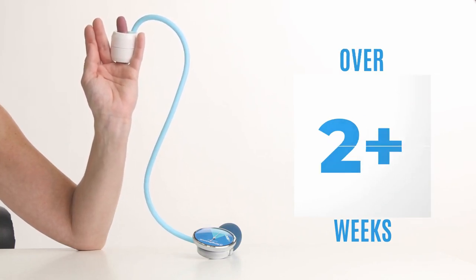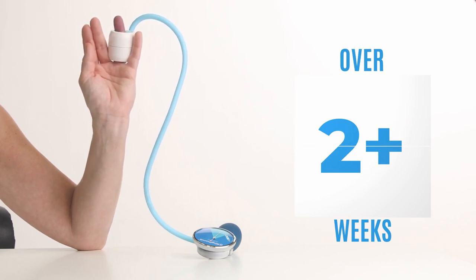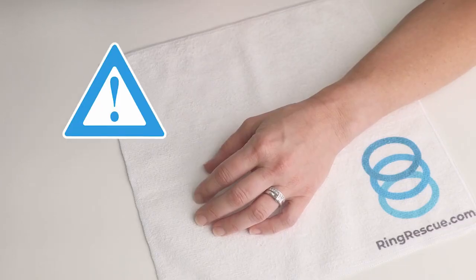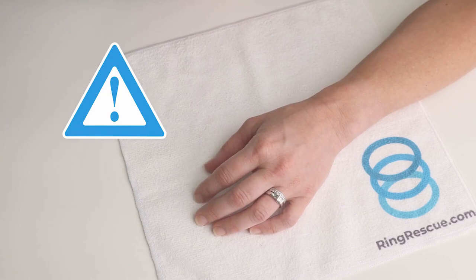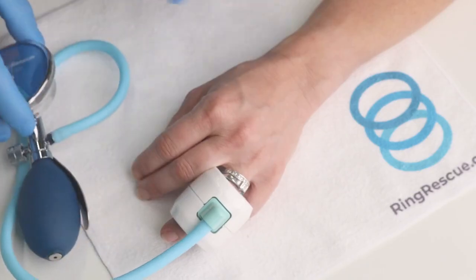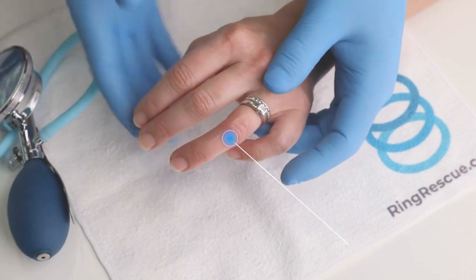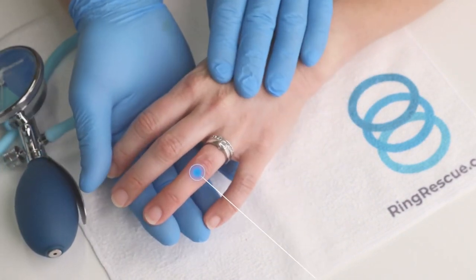When a ring has been stuck for longer than two weeks or other unique situations, we recommend applying the device for another round as the cause is most often tissue related. In unique cases like osteoarthritis and severe weight gain, you will likely need a ring cutter to remove the ring. However, in these cases our device compresses the finger to a more manageable size in order to place a ring cutter in more efficiently.